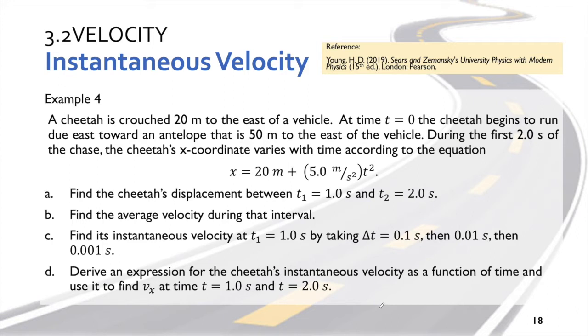So we have here x = 20 plus 5.0 meters per second squared times t squared. Now if you are looking for the initial again, the initial...